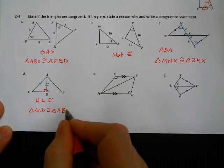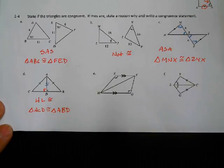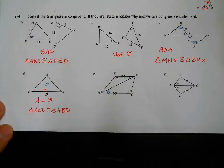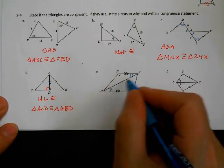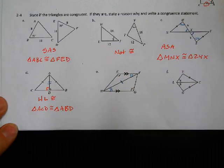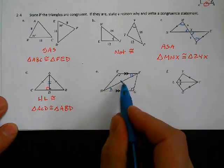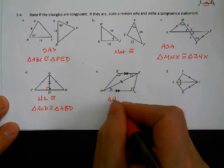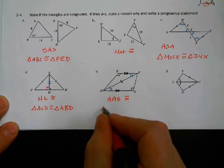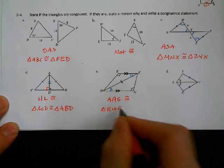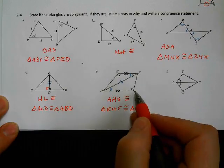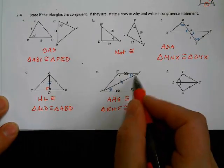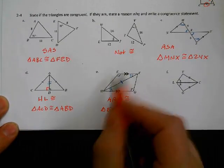On this one, we've got parallel lines, so we can say we have alternate interior angles: that angle and this angle are congruent. We also have a shared side — reflexive property. So now we have Angle-Angle-Side congruence: angle, angle, side; angle, angle, side. Remember, in AAS the side is not directly between the two angles. So triangle EHF is congruent to triangle GFH — E corresponds to G, H corresponds to F, and F corresponds to H.